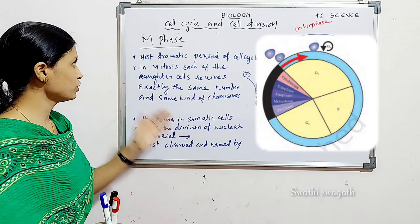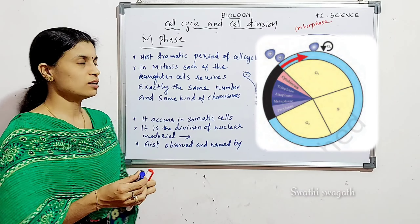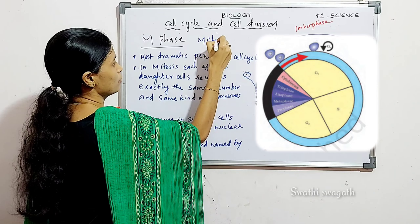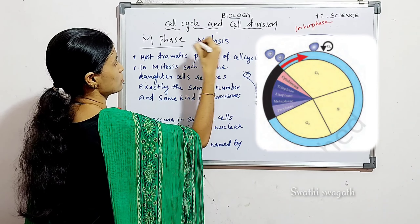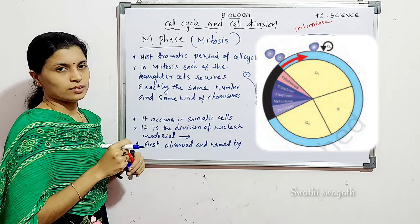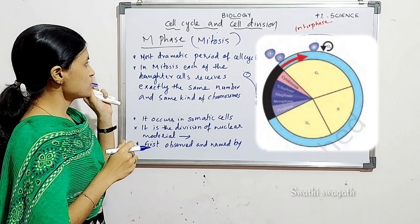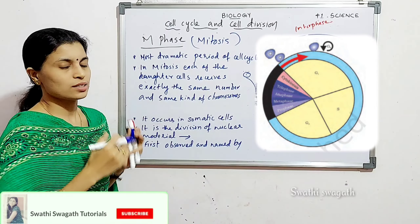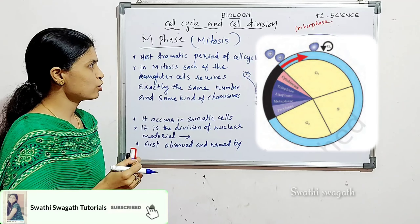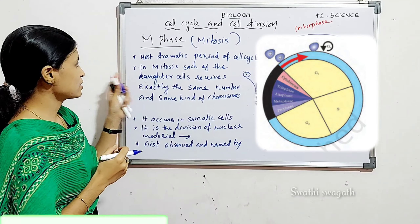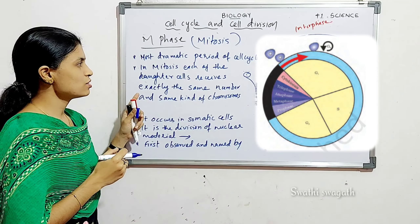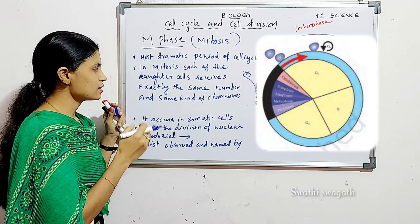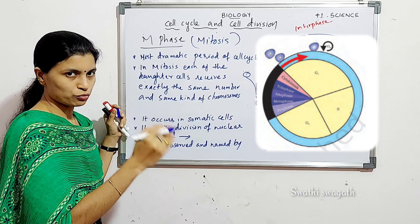Let's see the characters of M phase. M phase is otherwise called Mitosis phase, or simply mitosis. This M phase is considered the most dramatic period of a cell cycle. And in mitosis, each of the daughter cells receives exactly the same number and the same kind of chromosome.